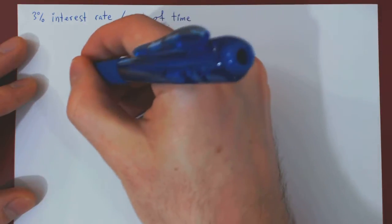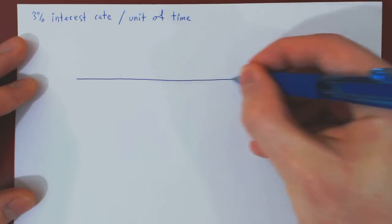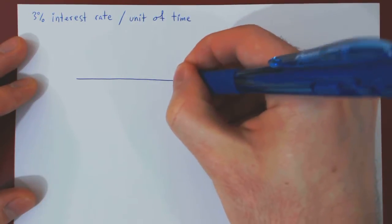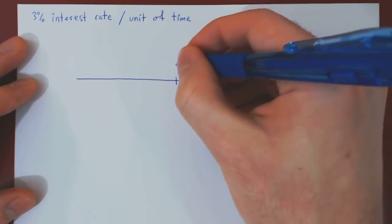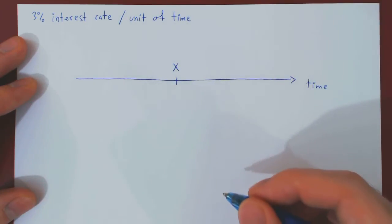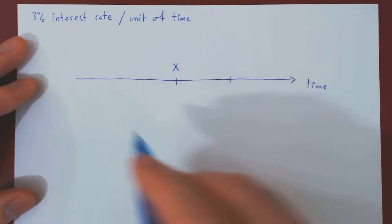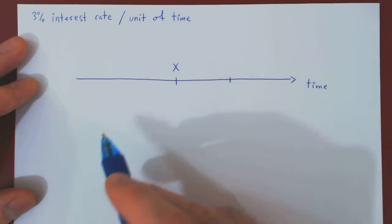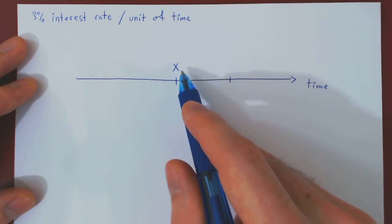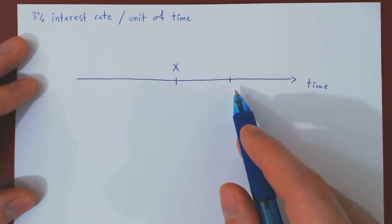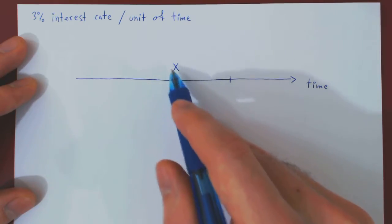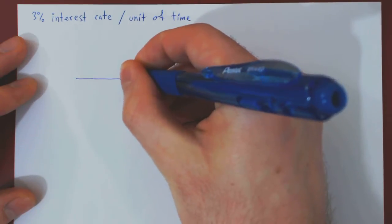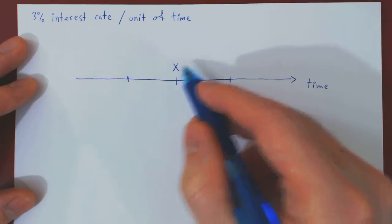So imagine that we have a timeline and at some point in time we have X dollars. The question is, under the possibility of investing X at 3% interest rate per unit of time, what happens to X when it is moved forward in time by one unit of time and what happens to X when it is moved backward in time by the same unit of time? Let's look forward first.